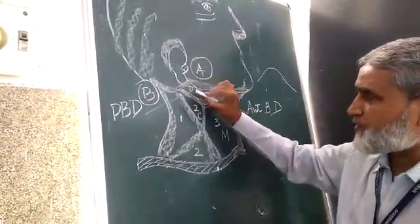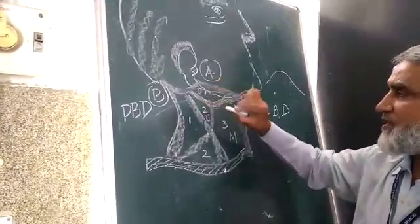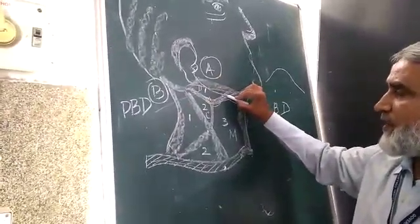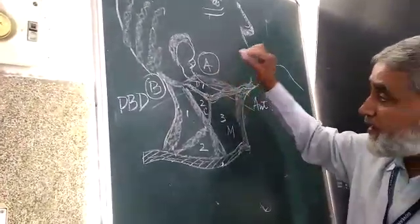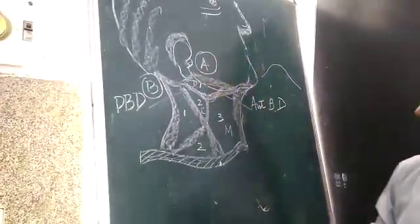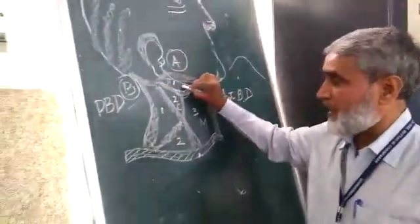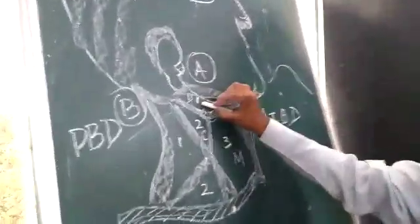Below these two, posteriorly posterior belly of digastric and anteriorly anterior belly of digastric, this triangle is limited superiorly by the lower border of your mandible. This triangle is known as digastric triangle.